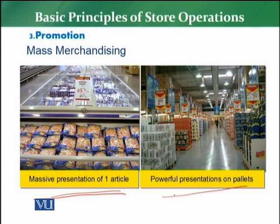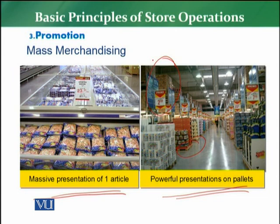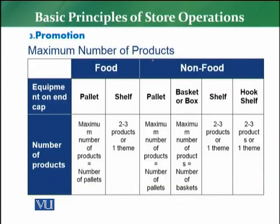The second point about mass merchandising is a powerful presentation. To make it powerful, you have to do it on pallets — pallets are wooden racks on which you display the product. The product must be properly palleted, clearly visible, and easy for the customer to see. Good signage communicates the promotion clearly to the customer, showing which products, how many, and which equipment to use for the display.